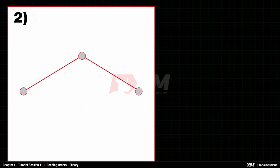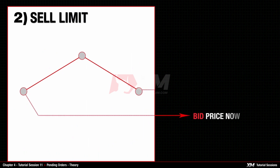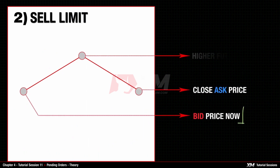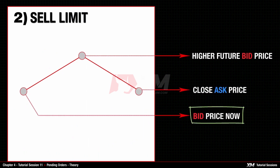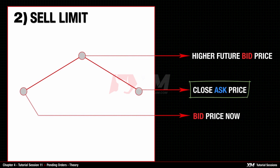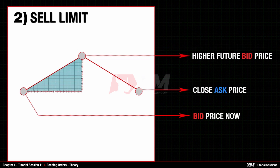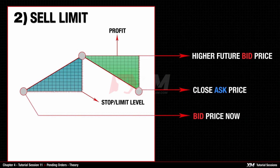Next comes the Sell Limit order. All Sell orders are opened at the Bid price and closed at the Ask price. Sell Limit orders must be opened at a higher future Bid price. To make a profit on this type of order, the Closing Ask price must be lower than the opening Bid price.